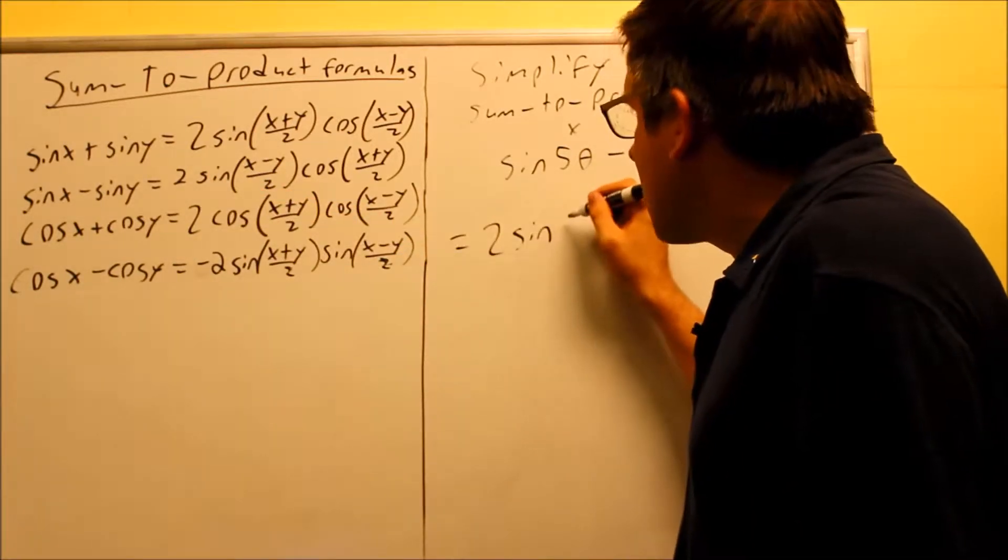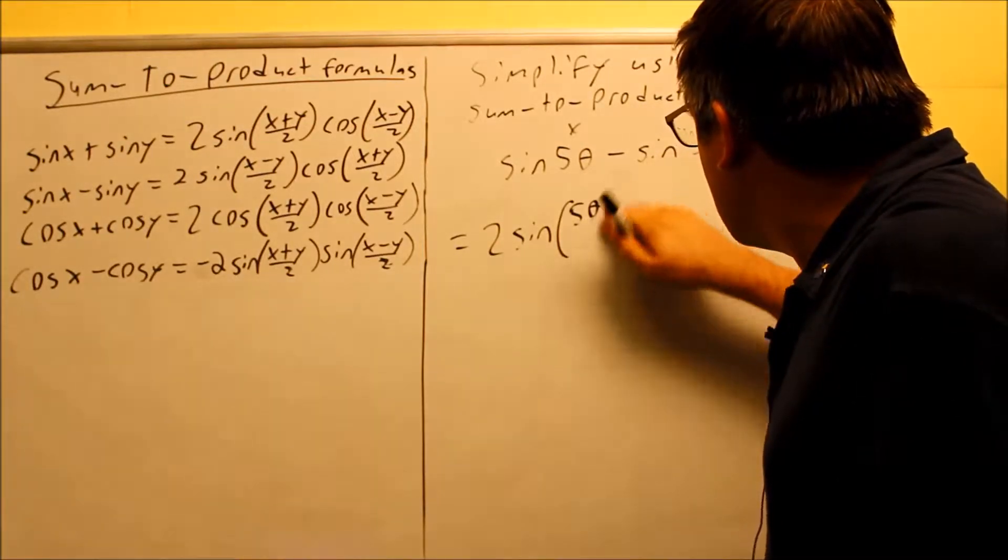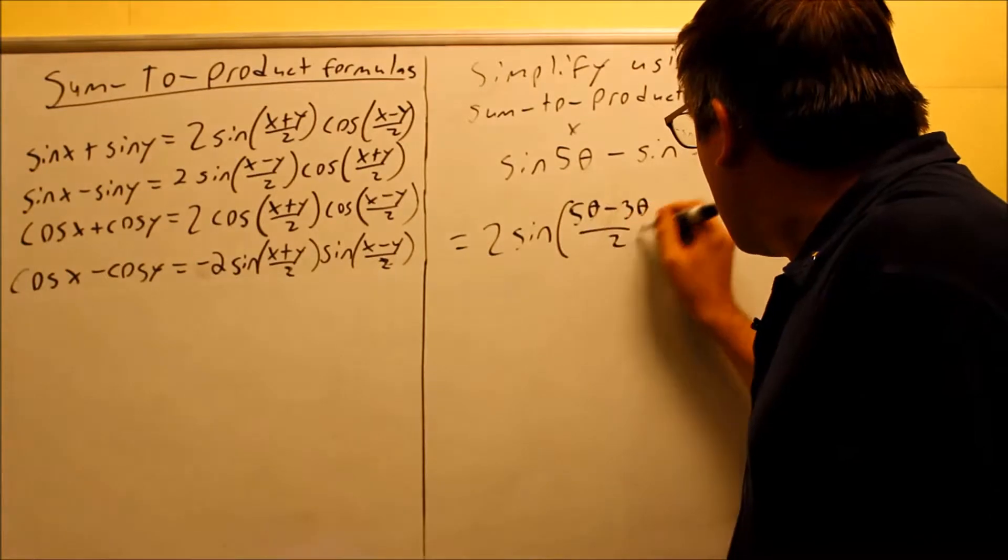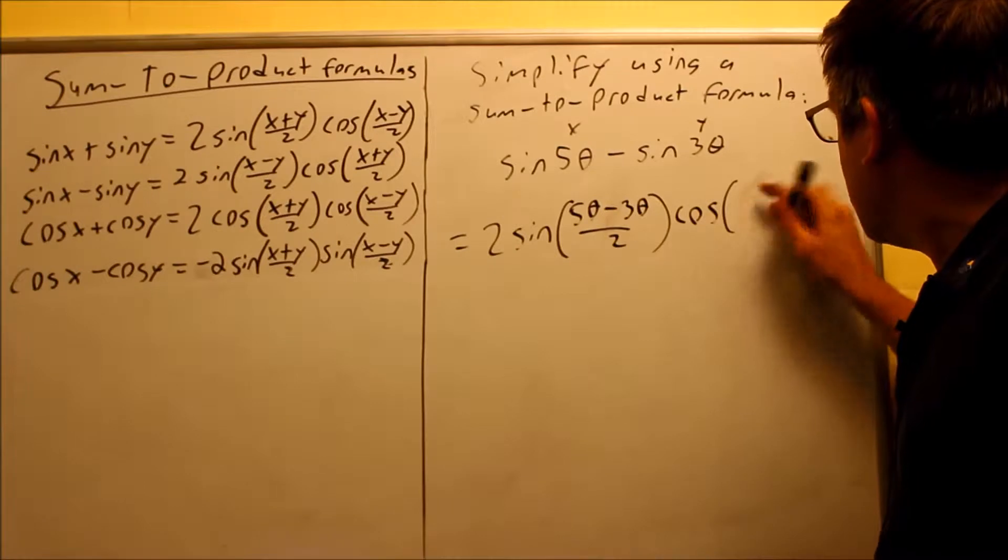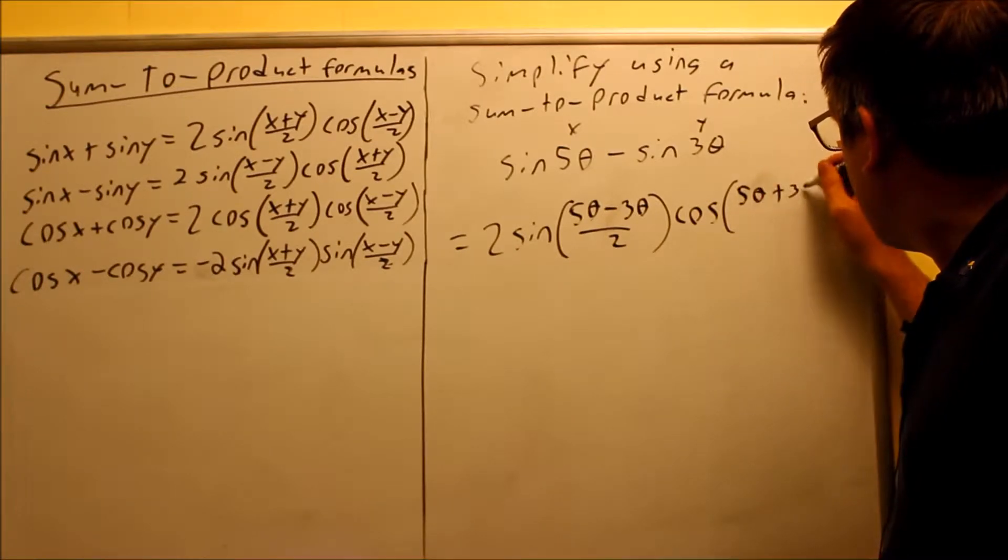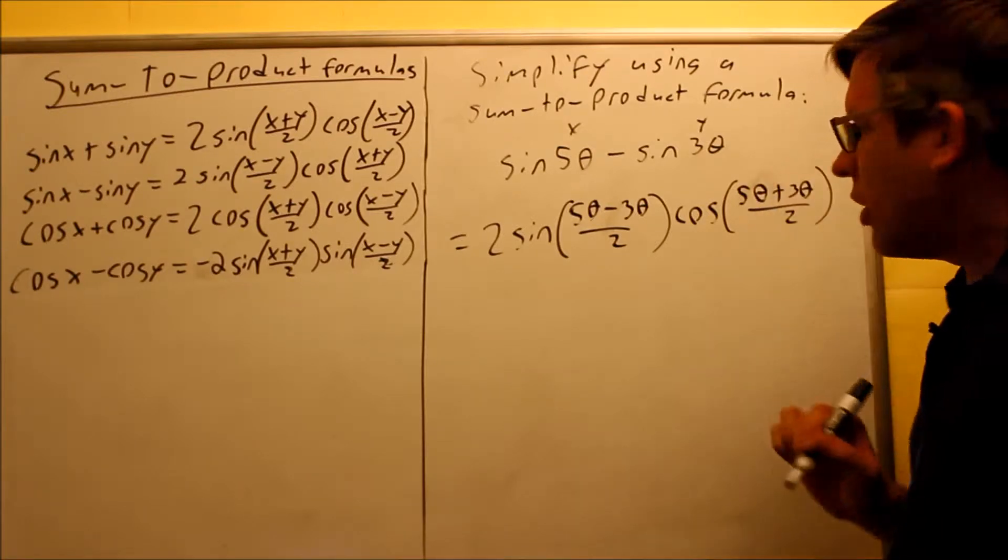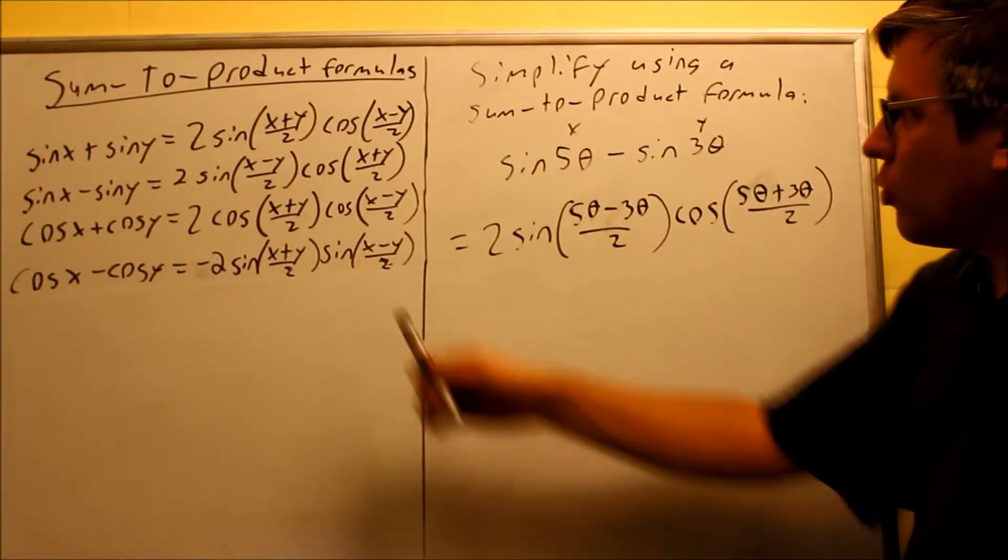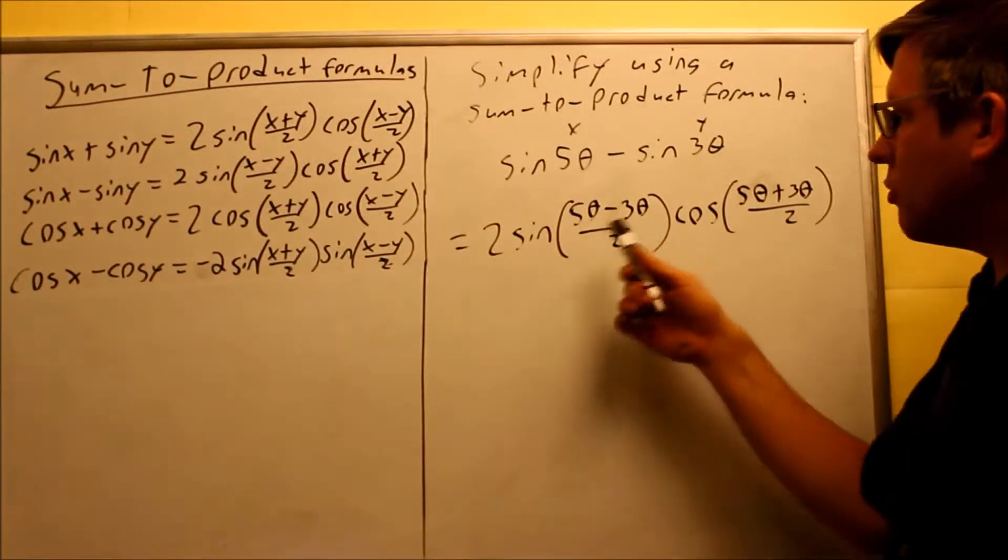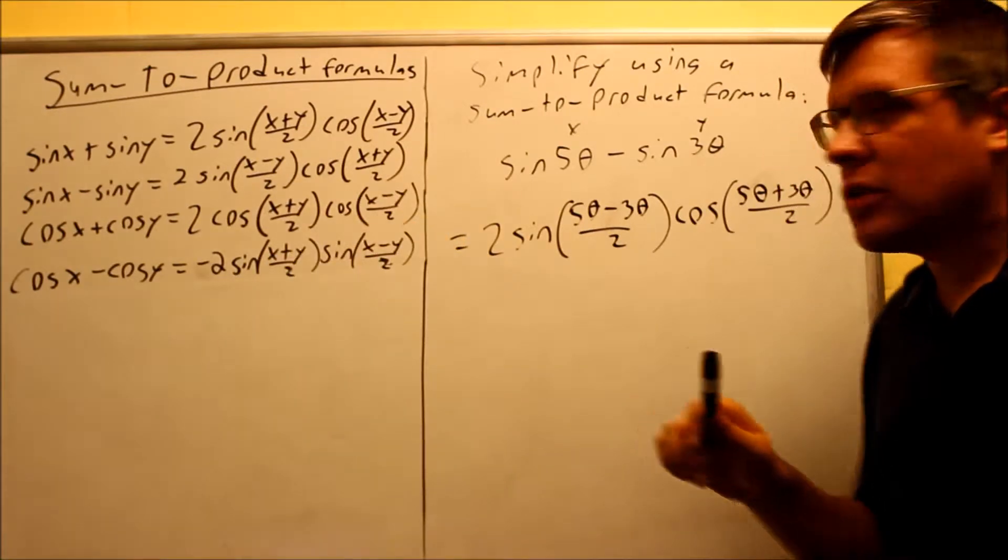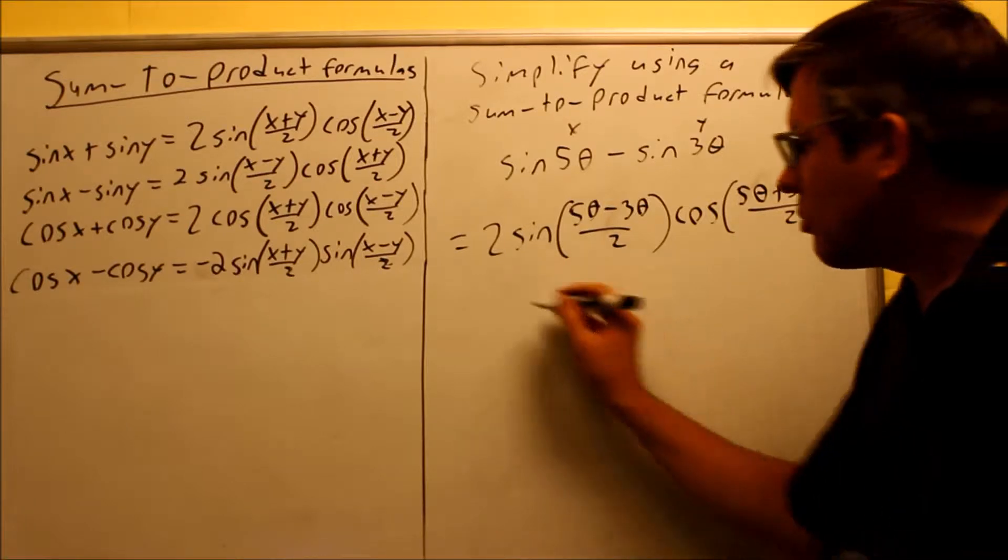We get 2 sine of x minus y over 2, so 5 theta minus 3 theta over 2. And we're going to do cosine of 5 theta plus 3 theta over 2. So now this is going to be the setup. We used the second formula. It was sine cosine, so be really careful because some of these are sine cosine and some of them are the same ones. So you've got to be careful when you write these out. So we have this, so now we just want to simplify.